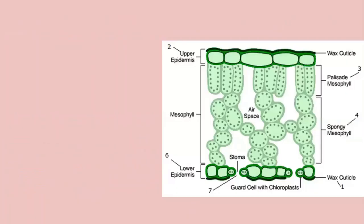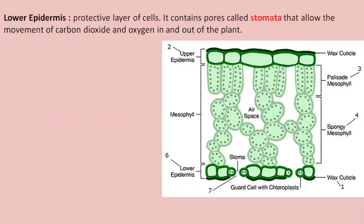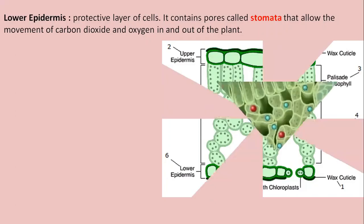As you can see in the diagram, just below the palisade mesophyll and spongy mesophyll lies the lower epidermis. Just like the upper epidermis, the lower epidermis is also a protective layer of cells, but it contains certain pores called stomata. Stomata allow the movement of carbon dioxide and oxygen in and out of the plant through small openings on the lower surface of leaves.